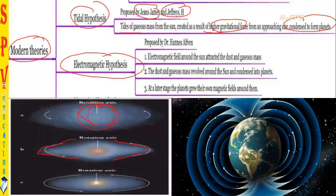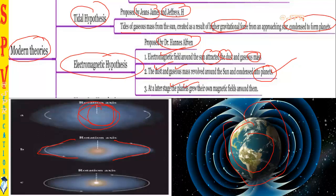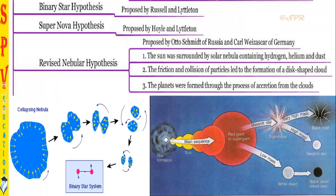The electromagnetic hypothesis was proposed by Hannes Alfvén. He said that an electromagnetic field produced by the earth or planetary particles would attract surrounding dust and gaseous masses. These dust and gas masses revolving around the sun — over years of rotation — condensed and came together to form planets. Later, these planets created their own magnetic fields around them.